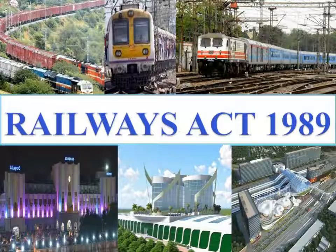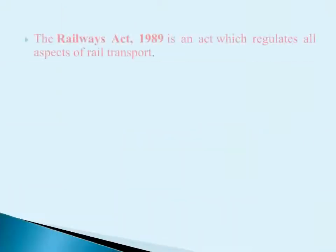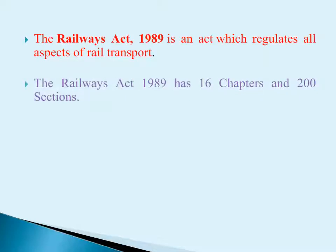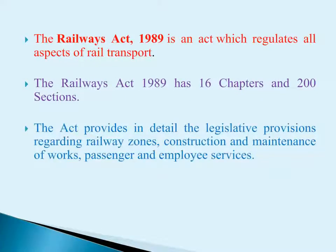Railways Act 1989. The Railways Act 1989 is an act which regulates all aspects of rail transport. It has 16 chapters and 200 sections. The act provides in detail the legislative provisions regarding the railway zones, construction and maintenance of works, and passenger and employee services.